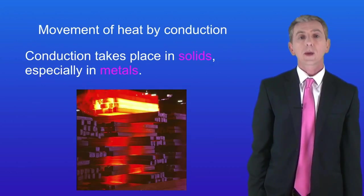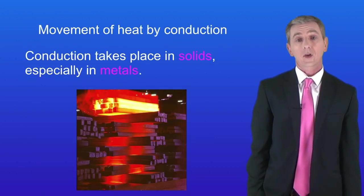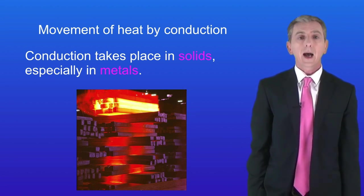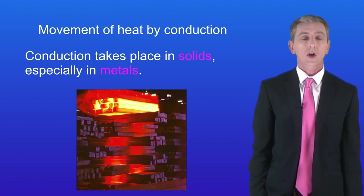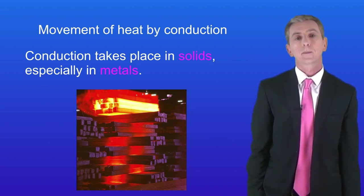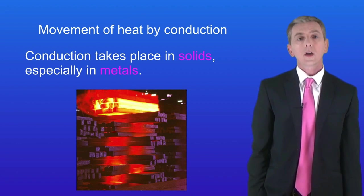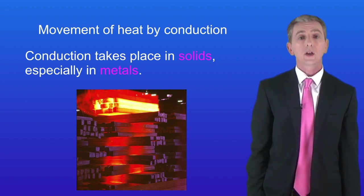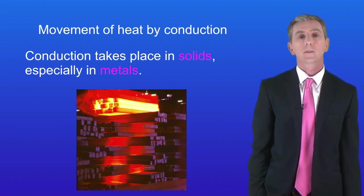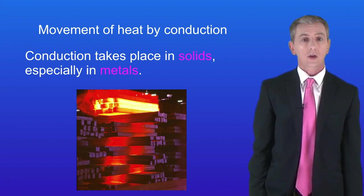Conduction takes place in solids and especially in metals, as shown in this diagram. At the top we've got a really hot piece of metal glowing white hot. The heat energy is passing through these metal bars by conduction and you can see how hot these bars are becoming. We're going to look at how heat moves by conduction and you should be able to explain that in terms of how the particles are arranged. The best conductors are solids. Liquids and gases are very poor conductors.